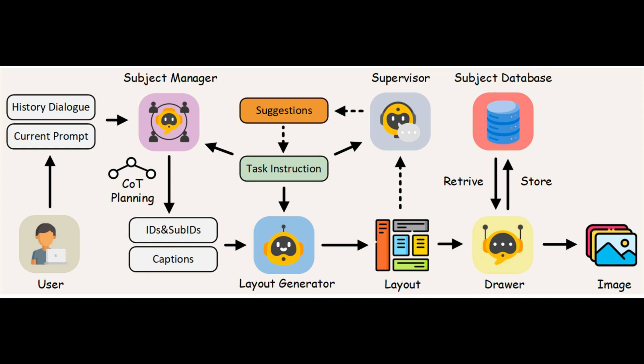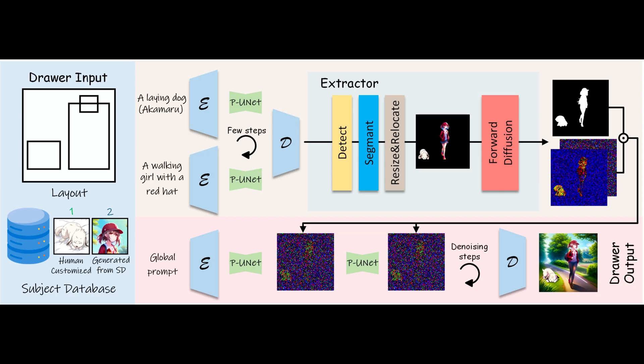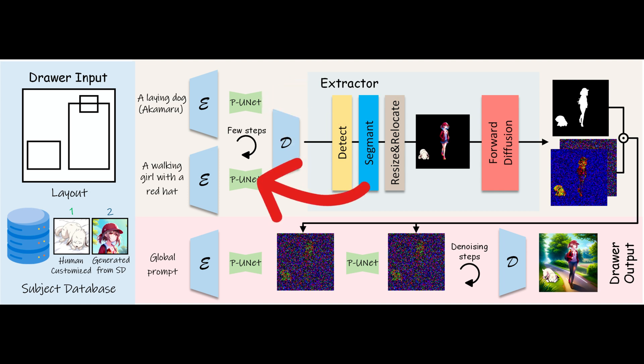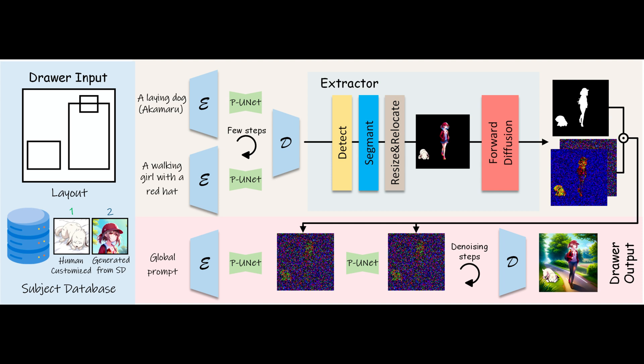Fourth, the Drawer: it takes the refined layout and generates high-quality images based on the subject database. One of the standout features of AutoStudio is its parallel U-Net, which replaces the original U-Net in the drawer and employs two parallel cross-attention modules. These modules are crucial for exploiting subject-aware features, making sure that small subjects are preserved and that the overall image quality is top-notch. AutoStudio also introduces a subject-initialized generation method, particularly useful for better preserving small subjects, ensuring that even minor details remain consistent throughout the generated sequence.